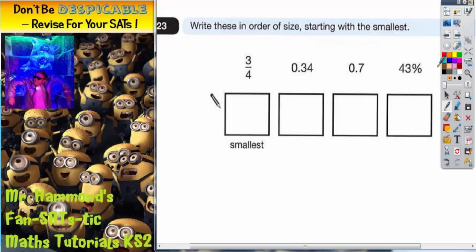What we could do is turn them all into decimals. So 0.34 is already a decimal, so that's fine. 0.7 is a one digit decimal, but to make it easy to compare, let's turn it into a two digit decimal, so 0.7 is the same as 0.70. And 43 percent is 0.43.